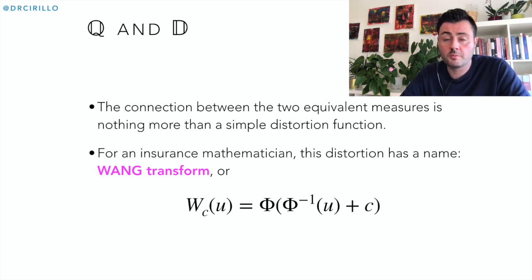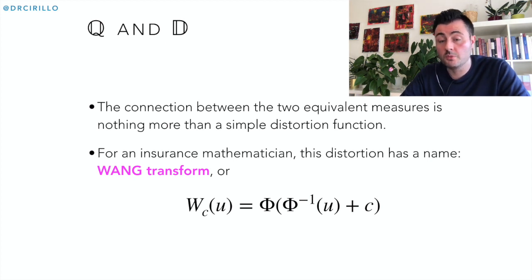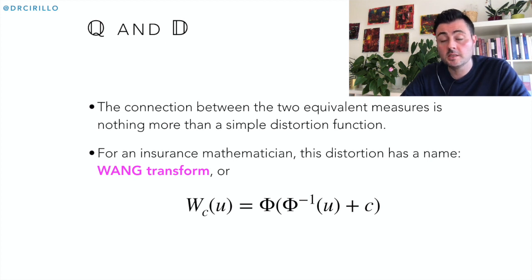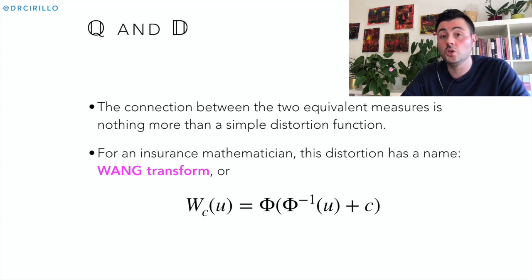The Wang transform is the object that involves the CDF of a standard normal and the quantile of a standard normal. It is extremely important — we will say more in the next classes. The Wang transform is a distortion function: it is zero at zero, one at one, and it is non-decreasing. An interesting characteristic is that it can be both concave and convex, depending on the sign of the quantity C in the formula. If C is positive, it is concave; if C is negative, it is convex. In any case, it lies in the unit square.